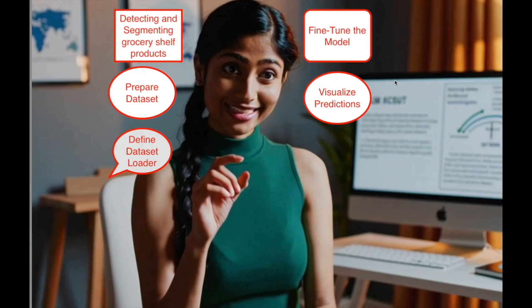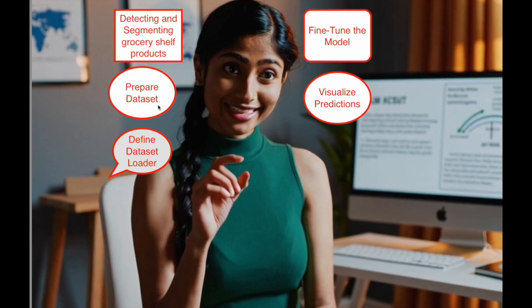Let us now look deeper into each step. Step 2: Prepare dataset. The dataset preparation begins with downloading the SKU-110k dataset — a standard dataset for product detection on shelves — and extracting its contents to a structured directory. Annotation files containing bounding boxes, labels, and image dimensions are loaded and validated. Invalid bounding boxes are filtered by clipping coordinates within image boundaries and removing entries where minimum bounds exceed maximum bounds. A subset of 50 images is created to reduce computational load, and this subset along with filtered annotations is saved for later steps, ensuring an efficient and clean dataset pipeline.